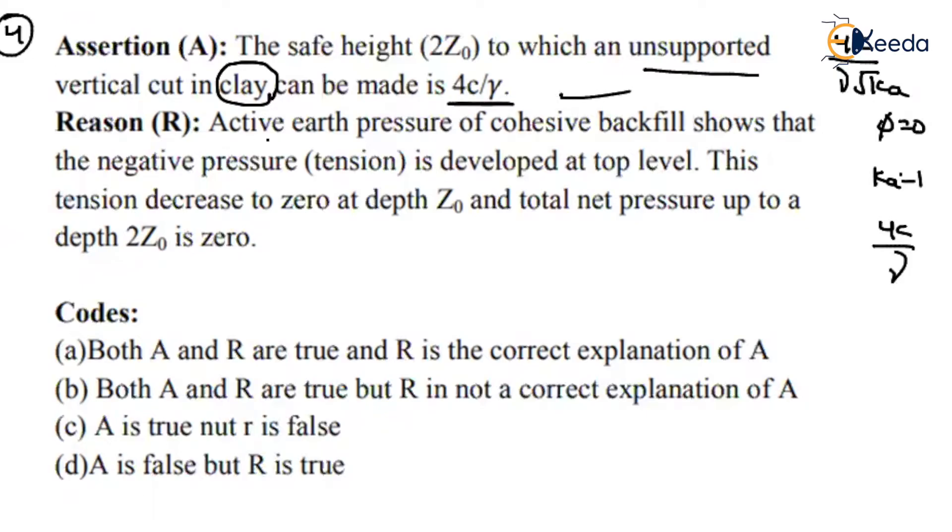What about the second statement? Active earth pressure of cohesive backfill shows that negative pressure is developed at the top level. This tension decreases to zero at depth Z₀, and the net pressure up to a depth 2Z₀ is equal to zero. Is this right or wrong?